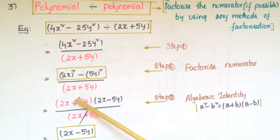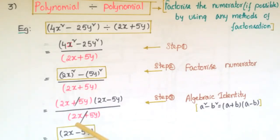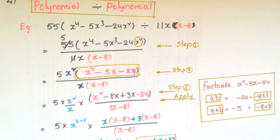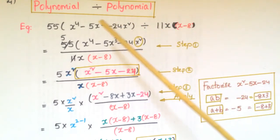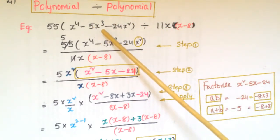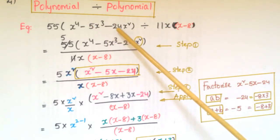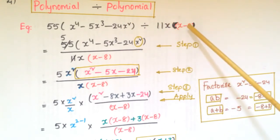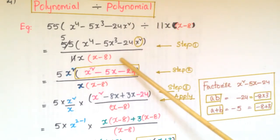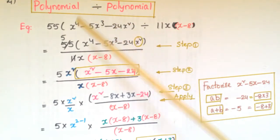We cancel (2x + 5y) from the numerator and denominator, and the answer is 2x − 5y. Here is another example of division of a polynomial by another polynomial: (55x⁴ − 5x³ − 24x²) divided by 11x(x − 8).